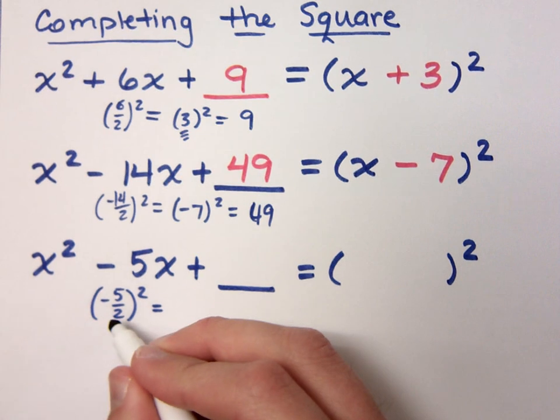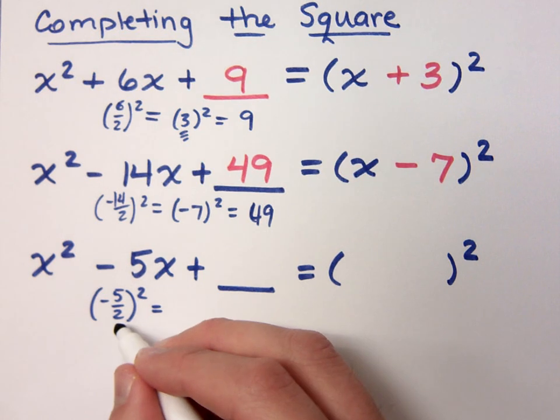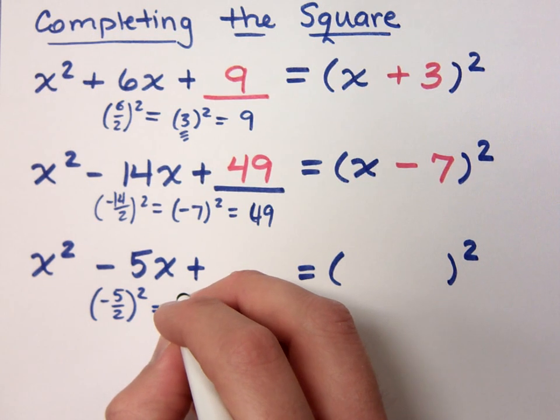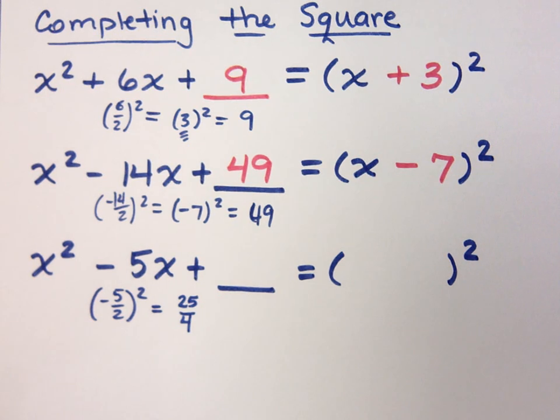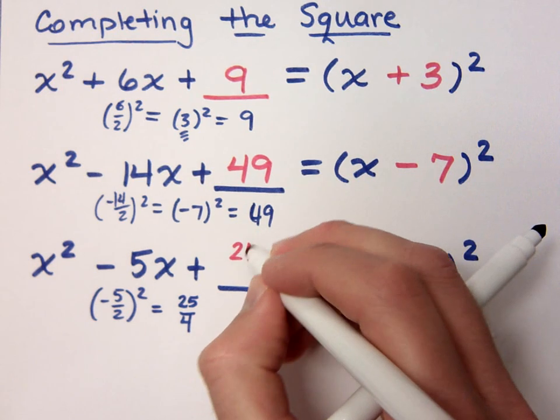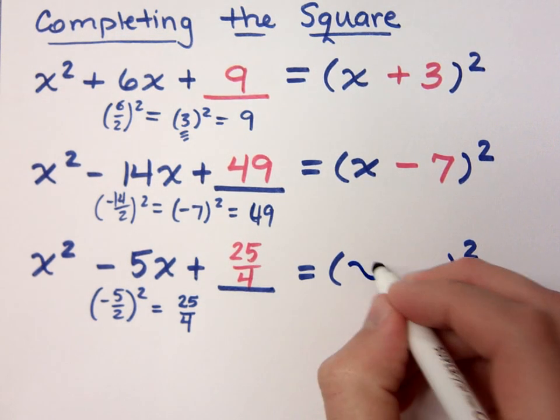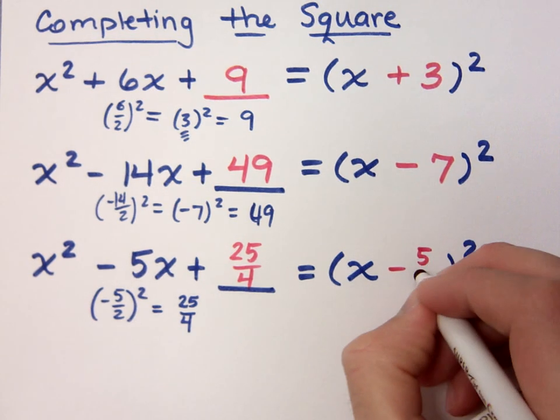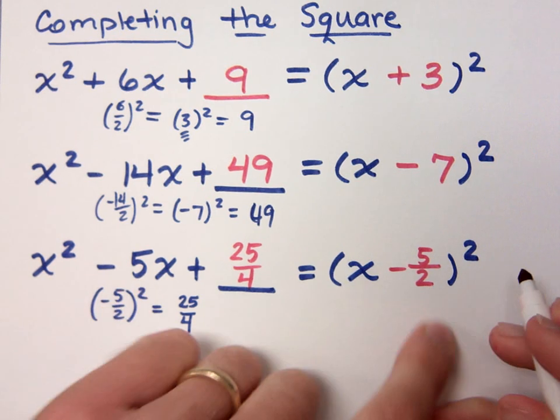Now, don't convert to decimals. Keep it as a fraction. Trust me on this. So 5 over 2 doesn't reduce. So leave it this way and square it. What do you get? I know we're going to say 25 over 4, right? So that's 25 over 4. What goes in the factored form over here, though? A minus 5 over 2. It's half of this guy, right? Goes over here. When I square that, I get this.